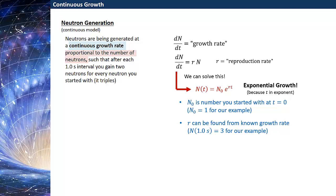The reproduction rate r can be found from our known growth rate. In our continuous model we said the number of neutrons after every one-second interval should be three. From that we can find what the reproduction rate is going to be. If I plug in one second into my solution using N₀ = 1, I can solve for r. Being careful about keeping units, the reproduction rate r is equal to inverse seconds times the natural log of three. That wasn't the first thing you might have thought — it was natural to think of it as being maybe three — but it turns out we need natural log of three to get the right growth rate after one second.